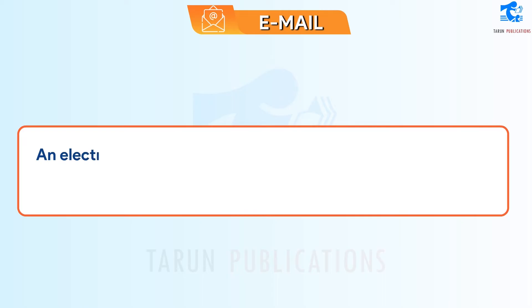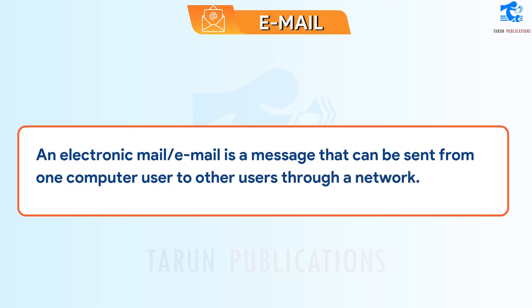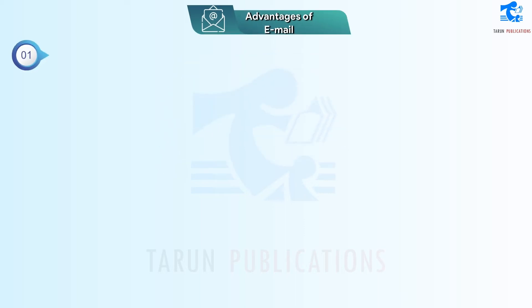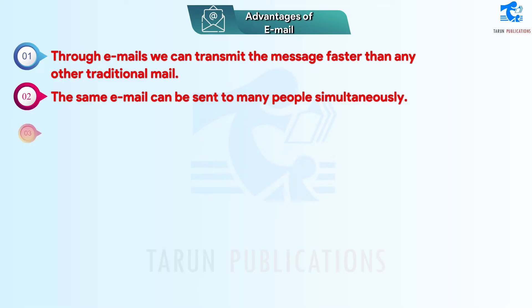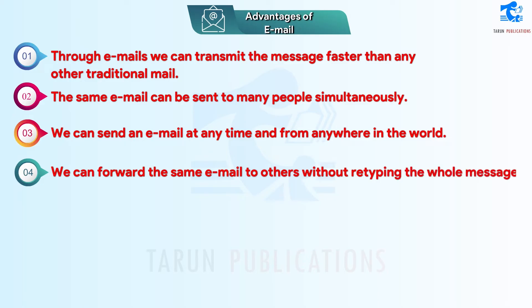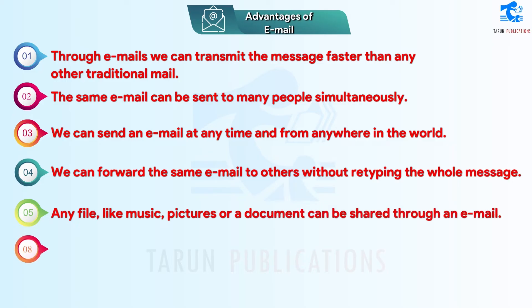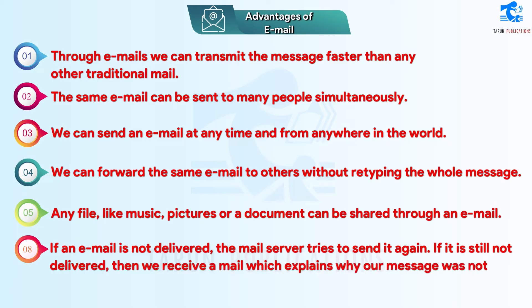Email. An electronic mail, or email, is a message that can be sent from one computer user to other users through a network. Advantages of email: Through emails we can transmit the message faster than any other traditional mail. The same email can be sent to many people simultaneously. We can send an email at any time and from anywhere in the world. We can forward the same email to others without retyping the whole message. Any file, like music, pictures, or a document can be shared through an email. If an email is not delivered, the mail server tries to send it again, and if it is still not delivered, we receive a mail which explains why our message was not delivered.